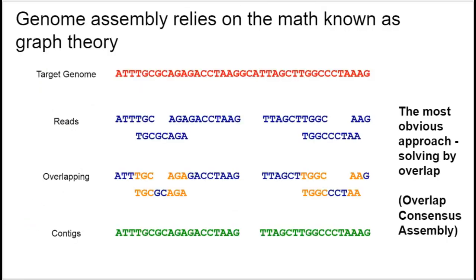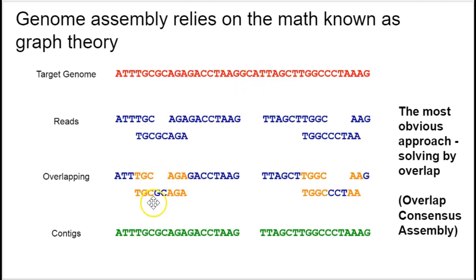Genome assembly relies on an area of math called graph theory. You've probably heard an oversimplification: we take these short raw reads, and to get back to something that looks like the target genome, we stack them up and look for areas of overlap — identified by alignment — and wherever there's meaningful overlap, we put those pieces together to form longer structures called contigs. This is the original approach: overlap consensus assembly. But that's not how we'll do our assembly, and I'll explain why.